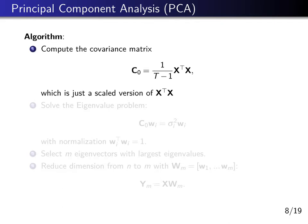The minus 1 is because we have lost a degree of freedom during computing the mean, but that's not so important. Mainly, we want to normalize the covariance matrix to the number of data points. This scaling factor 1 over the number of time steps will not change the result.